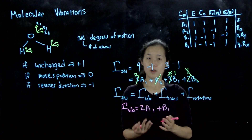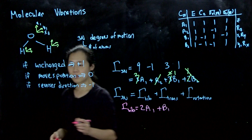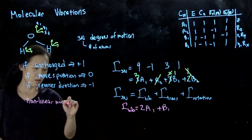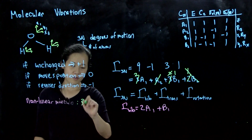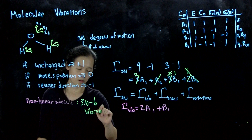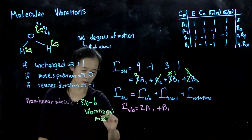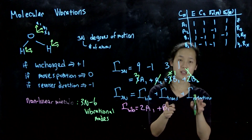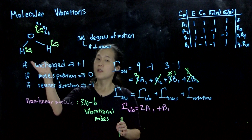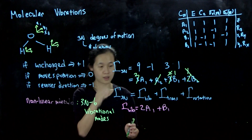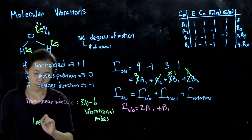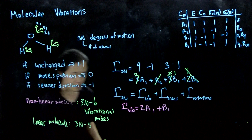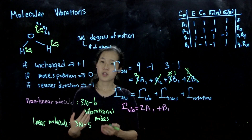We have only three vibrational modes for water. For a non-linear molecule, you have 3N − 6 vibrations, because 3N accounts for all atomic motion, minus 6 for losing three translational and three rotational degrees of freedom. For a three-atom molecule, that's 9 − 6 = 3 vibrations for water. If we have a linear molecule, we lose one degree of rotation, so vibrational modes would be 3N − 5. In the next video, we'll talk about visualizing what these look like using group theory.